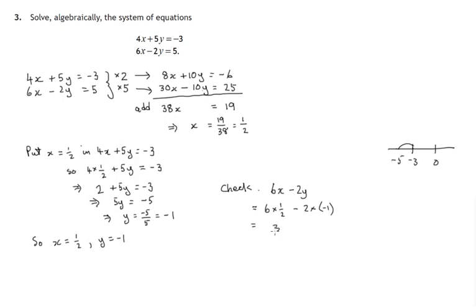6 halves are 3. Negative 2 times negative 1 is positive 2. And 3 plus 2 is 5. So that ties up with the second equation. So it looks like our solution then is x equals a half and y equals negative 1.